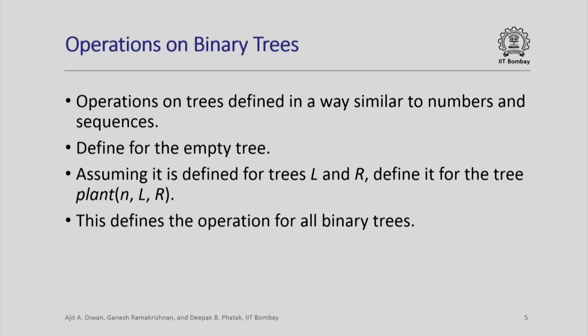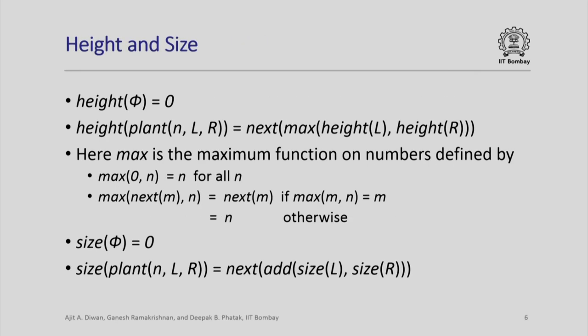Operations on binary trees are defined in a way very similar to what we did for numbers and sequences. We define the operation for the empty tree as the base case, and assuming it is defined for trees n, l, r, we define it for the tree obtained by planting l and r at a node n. This defines the operation for all binary trees because every binary tree can be obtained using the plant operation.